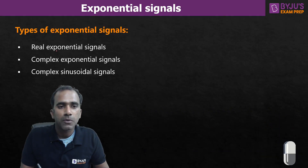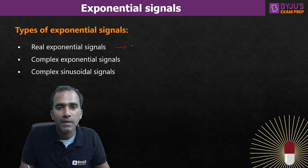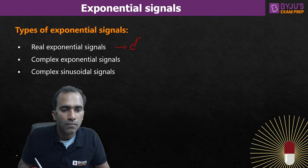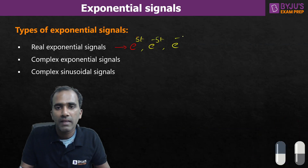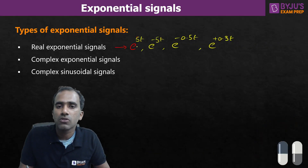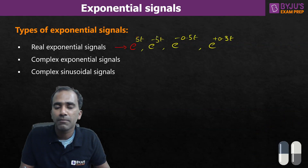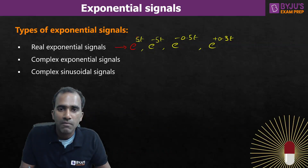The first type is a real exponential signal, which takes real values only. For example: e^(5t), e^(-5t), e^(-0.5t), e^(+0.3t). If the power is real, the total signal is also real. This means at any point of time, for any value of time, the signal takes only real amplitudes. We call these real exponential signals.